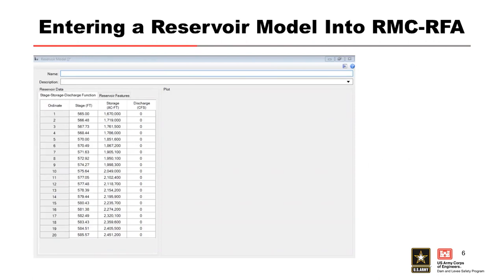There are four steps to entering a reservoir model into RMCRFA. The first step is to enter a name and a description. The second step is to enter the reservoir data into the table. Those three pieces of information are stage, storage, and discharge.